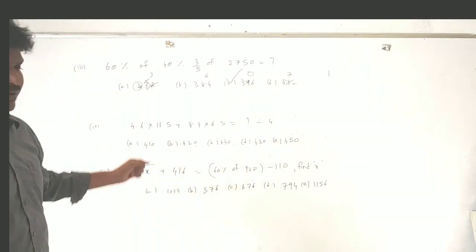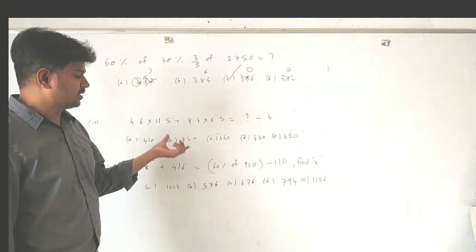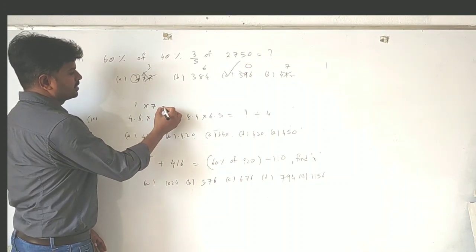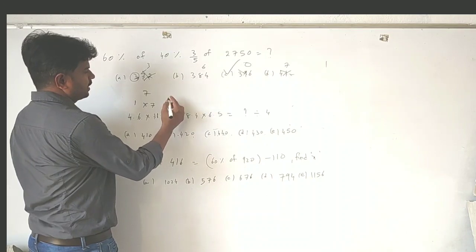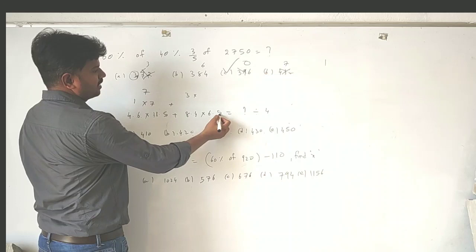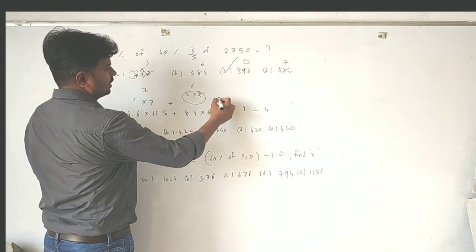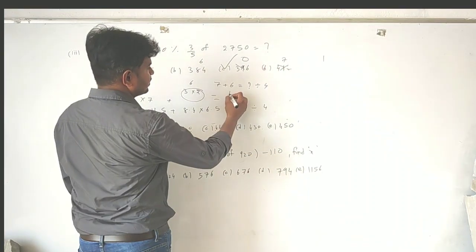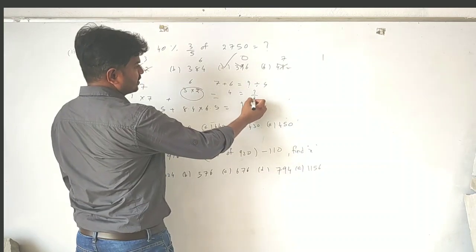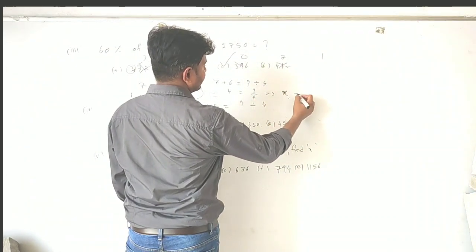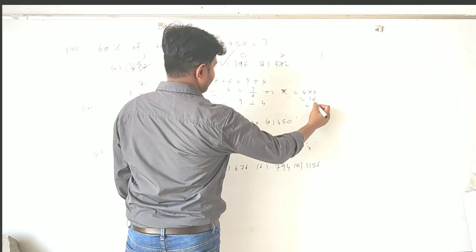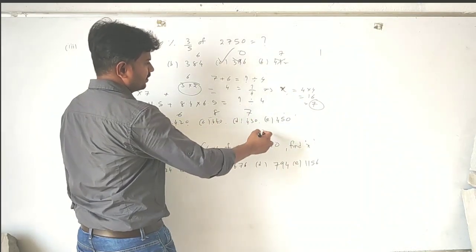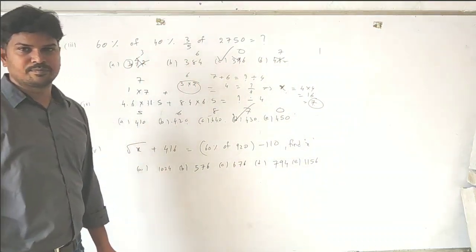Even in decimal form, you can apply digital sum the same way as for normal numbers. For example, 4.6 has digital sum 10, and its sum is 1. Then 1 times 5 gives 7. Next, 8 plus 4 is 12, which gives 3. Then 3 times (6 plus 5 is 11), 11 gives 2, whose digital sum is 6. Now 7 plus 6 equals 13, whose digital sum is 4. So 4 equals some unknown X divided by 4. If you take the 4 across, X equals 4 times 4 equals 16, whose digital sum is 7. From the options, the digit sum of D is 7 — so D is the answer.